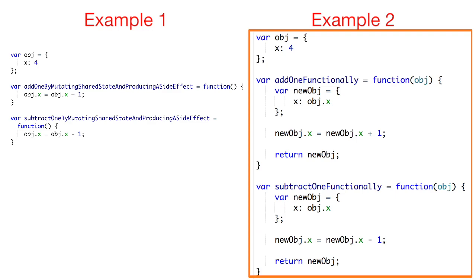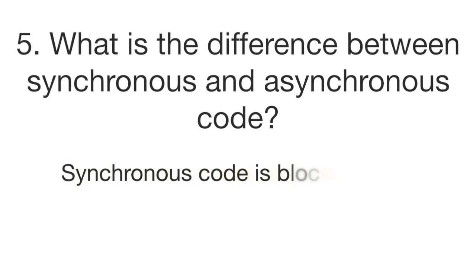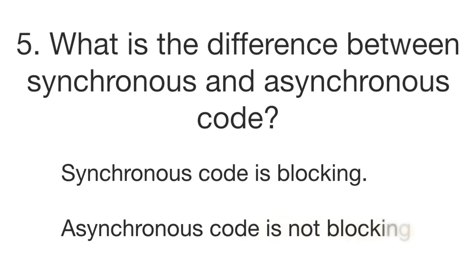In the second example the object is not shared or mutated at all. The two functions don't mutate the object but rather take it as an argument, make a copy of it, and then perform the operation on the copy. So unlike the first example, we always know exactly what the functions will return based on what we pass in.